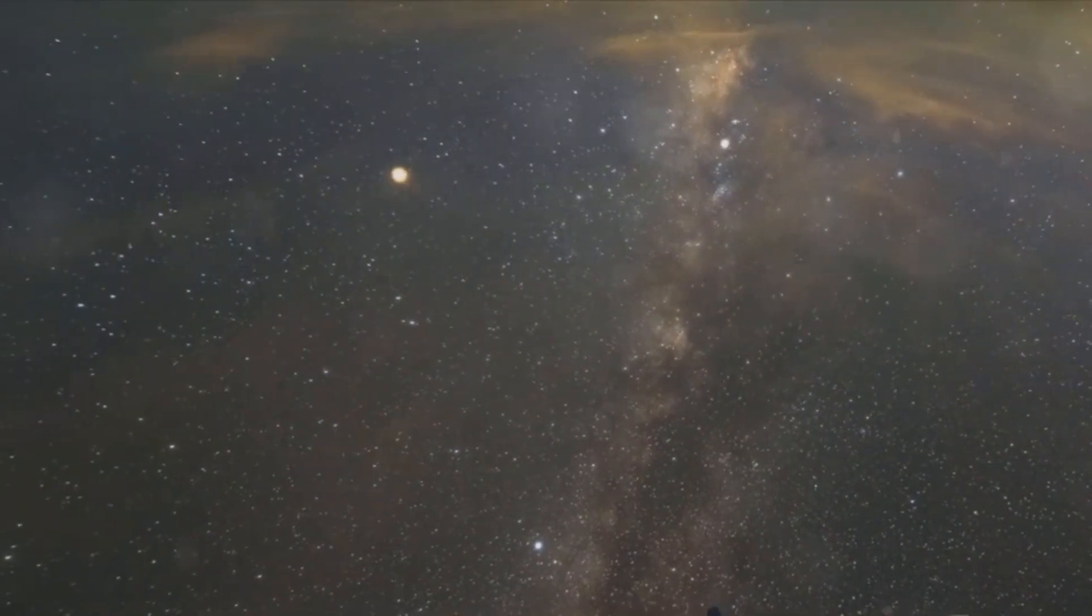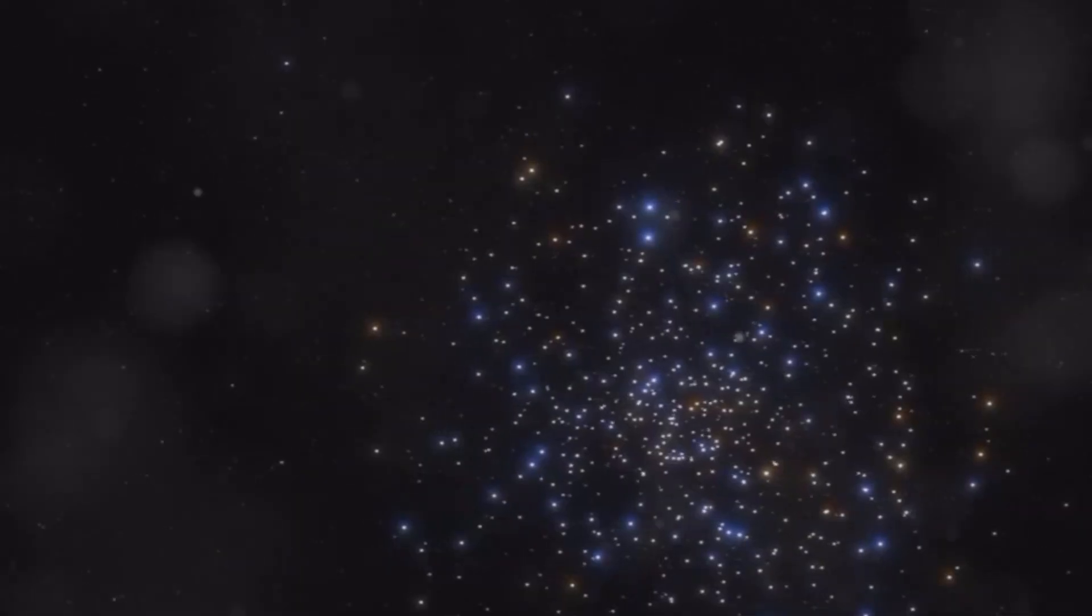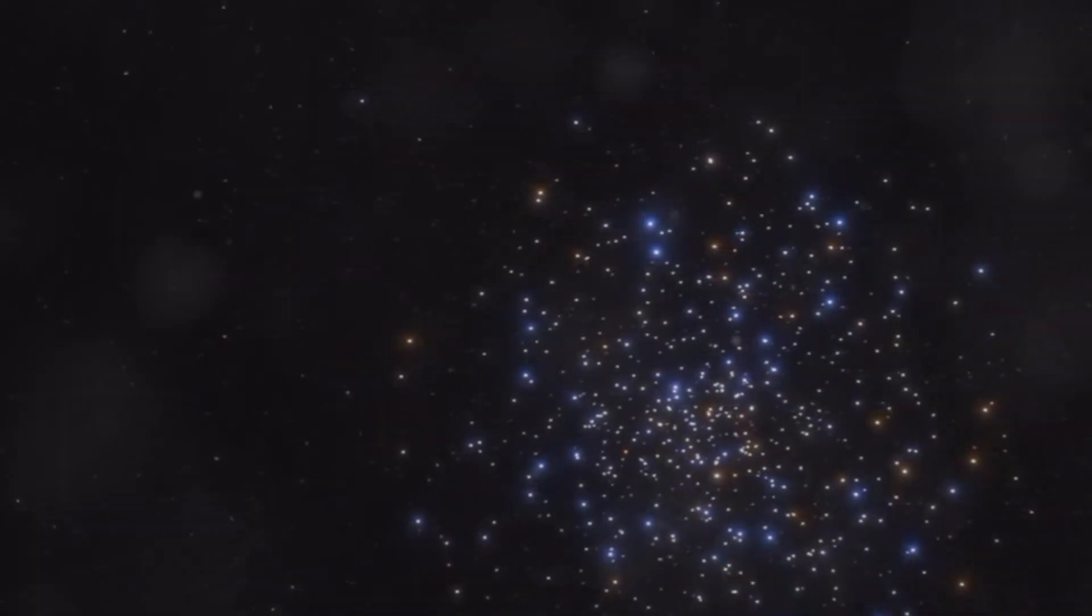CX-330 is very young and very alone, a solitary beacon in the vastness of space. It is far from any other stars, isolated in a way that is uncommon for such young stars. This is strange because stars usually form in groups, clustering together in stellar nurseries.